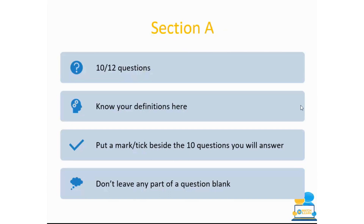Moving on to the nitty gritty — let's look at Section A and Section B. Section A is the short questions. There will be 12 questions and you need to answer 10. It's very important that you know your definitions. Each short question will be worth 10 marks, so Section A is worth 100 out of the 300 marks. In the five minutes at the start, put a mark beside the 10 questions you'll answer and try not to leave any part of a question blank.